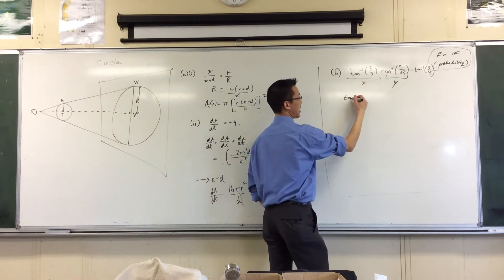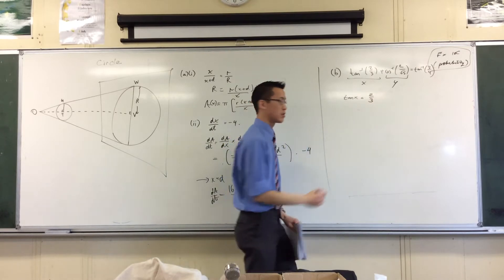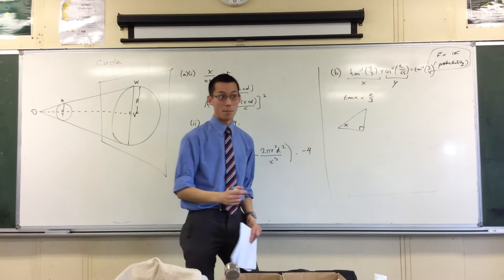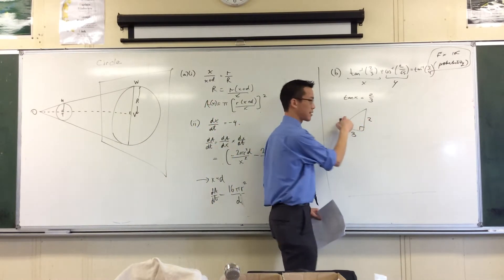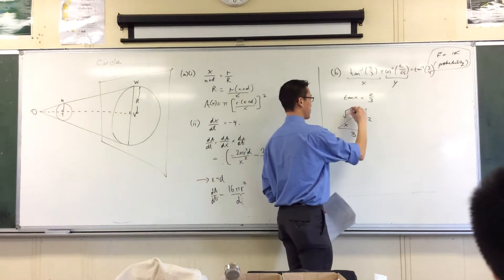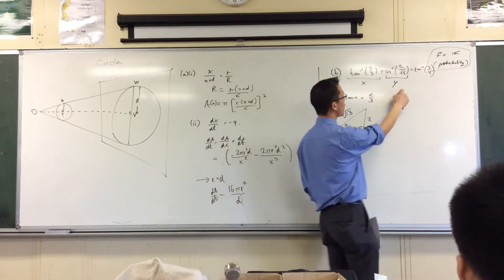Here you'd say, well tan x is going to be 2/3, so then you're drawing triangle, you'd say okay, I'll stick x over here, opposite 2, adjacent 3, that makes this the square root of 13. So there's one of the angles I'm going to need.